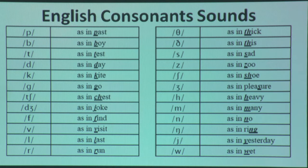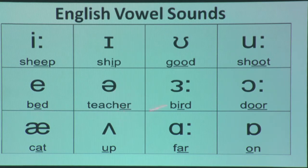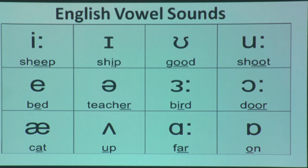Now for English vowel sounds: long /iː/ as in 'see,' short /ɪ/ as in 'sip,' /ʊ/ as in 'good,' long /uː/ as in 'suit,' /e/ as in 'bed,' /ə/ as in 'teacher,' /ɜː/ as in 'bird,' /ɔː/ as in 'door,' /æ/ as in 'cat,' /ʌ/ as in 'up,' /ɑː/ as in 'far,' and /ɒ/ as in 'on.' You need to have an idea of these consonant and vowel sounds.